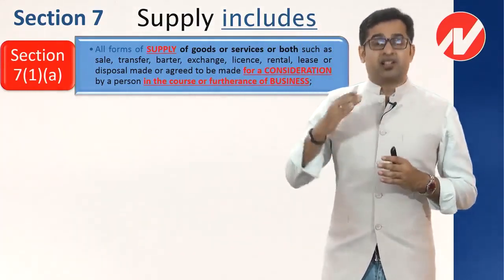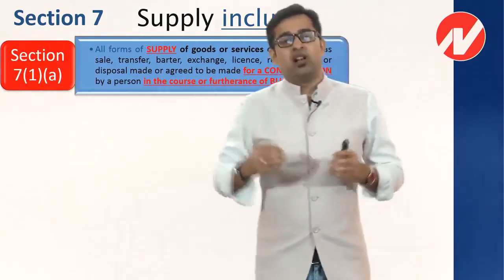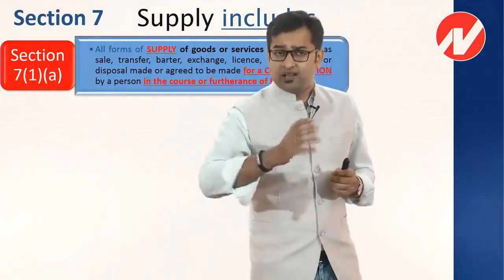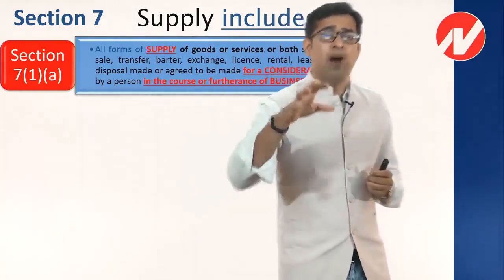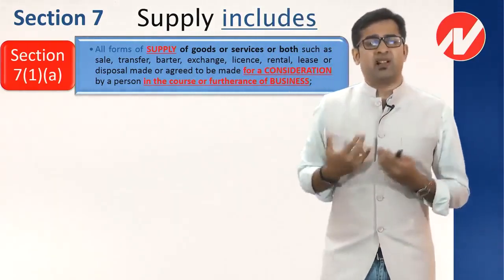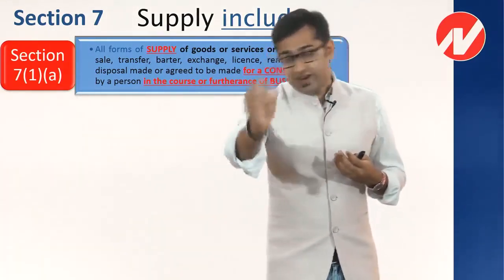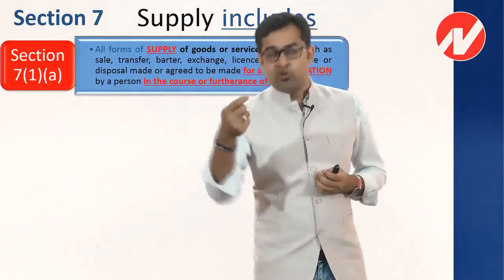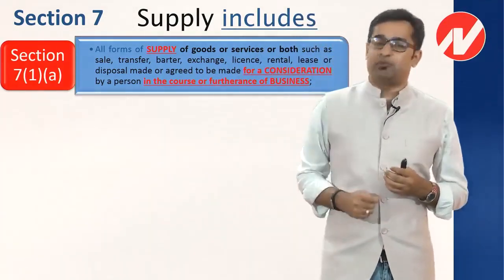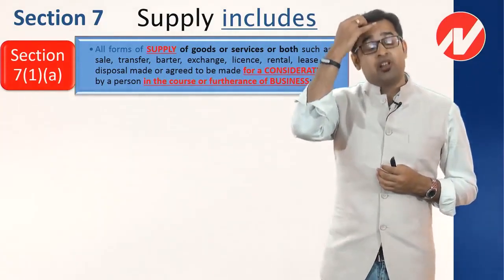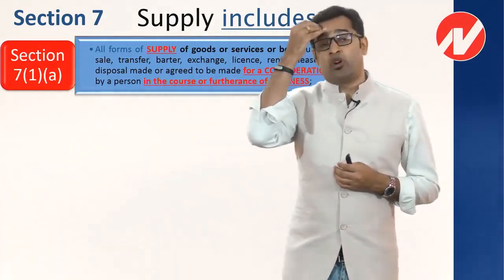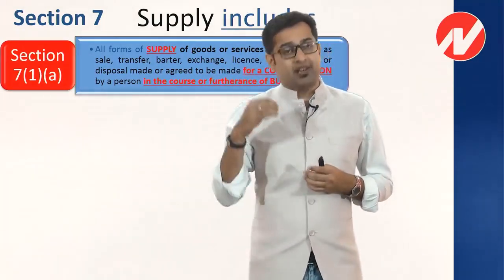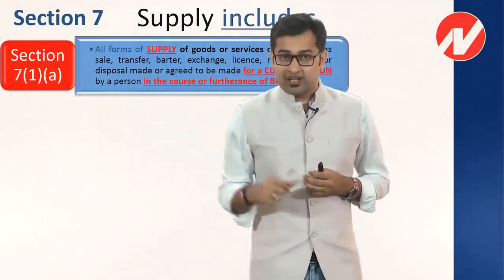Then barter and exchange: barter deals with goods against goods — that is the best example of barter. While exchange involves a monetary aspect; for example, if I give you one currency and you give me another, that is exchange. Barter only deals with goods, while exchange involves monetary aspects.